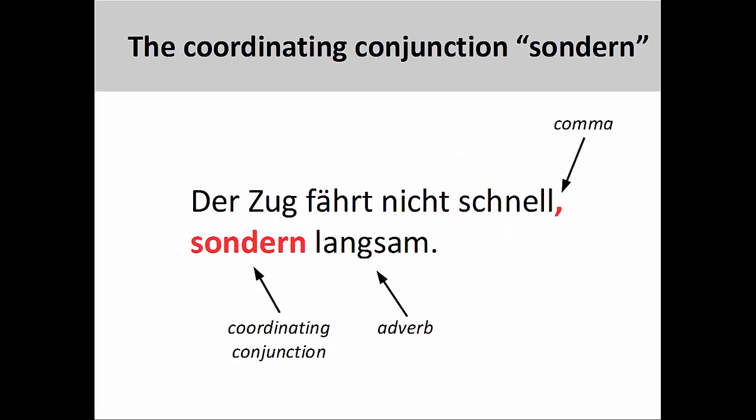When negating adjectives and adverbs with nicht, we can provide additional contrasting information by using the coordinating conjunction sondern, meaning 'but' or 'rather.' For example: der Zug fährt nicht schnell, sondern langsam — the train doesn't run fast, but rather slow. Note that you need to use a comma before sondern to mark the end of the clause. We'll cover coordinating conjunctions in more detail in a later presentation.